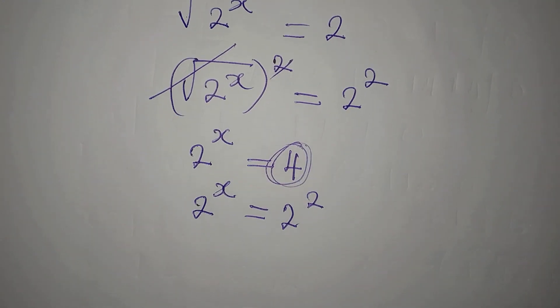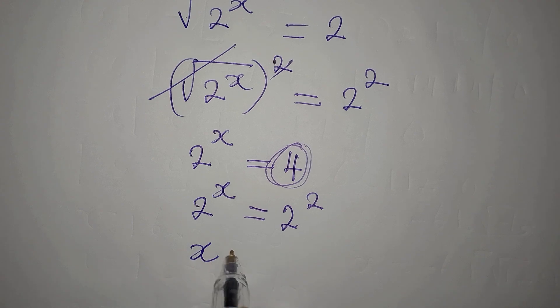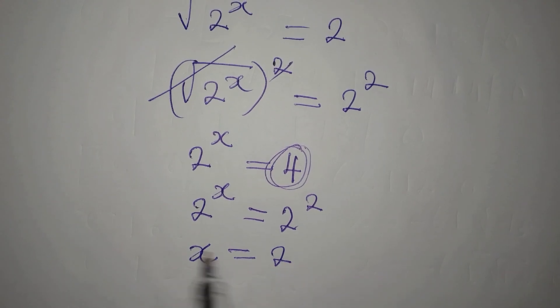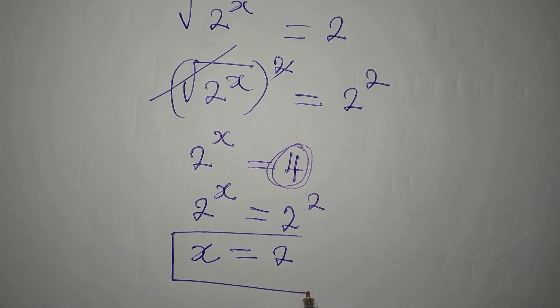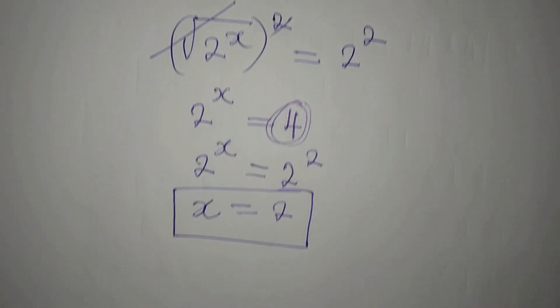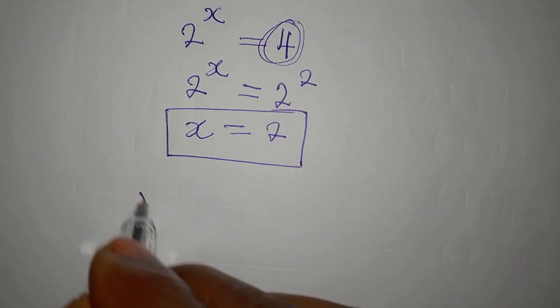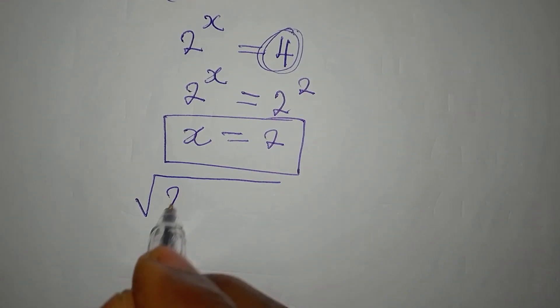Now the bases are the same, so we believe that the powers must also be equal. So the value of x is 2. And like we do always, we verify. The equation is still 2.